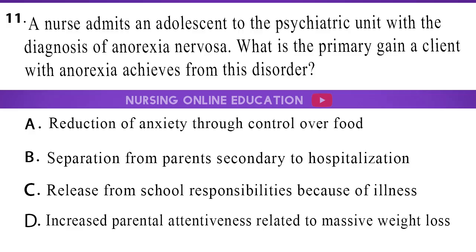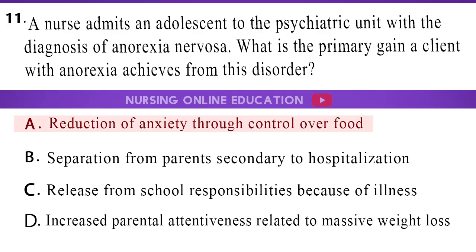Question 11: A nurse admits an adolescent to the psychiatric unit with the diagnosis of anorexia nervosa. What is the primary gain a client with anorexia achieves from this disorder? A. Reduction of anxiety through control over food. B. Separation from parents secondary to hospitalization. C. Release from school responsibilities because of illness. D. Increased parental attentiveness related to massive weight loss. The answer is option A: Reduction of anxiety through control over food.